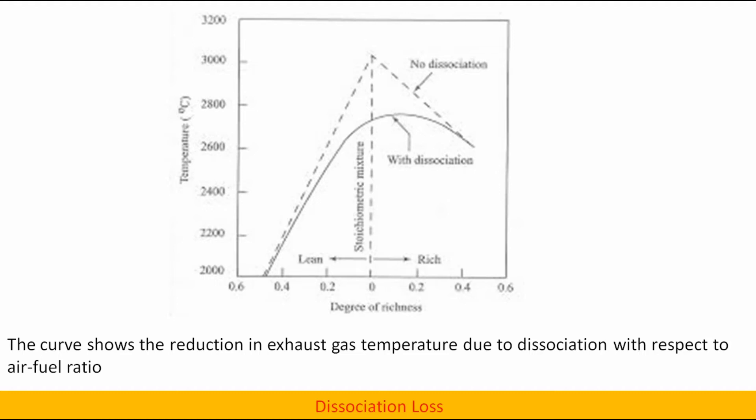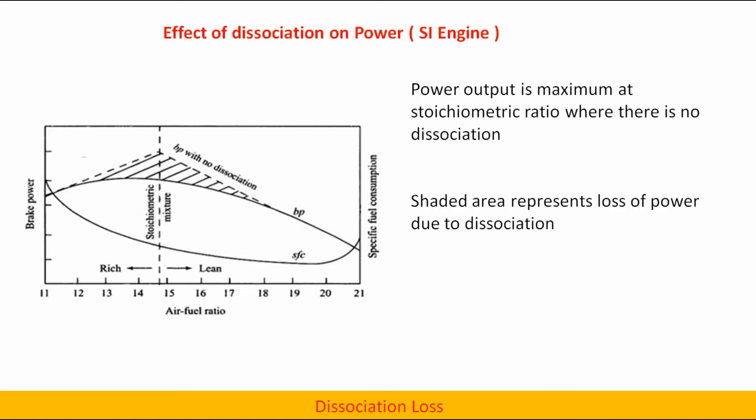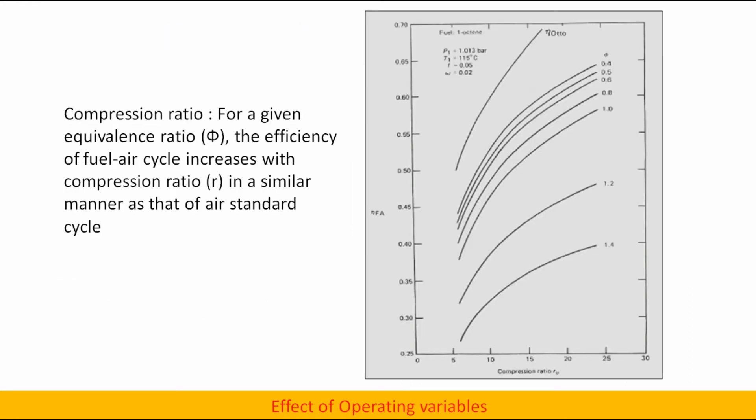The curve shows the reduction in exhaust gas temperature due to dissociation with respect to air-fuel ratio. Effect of dissociation on power: power output is maximum at stoichiometric ratio where there is no dissociation. Shaded area represents loss of power due to dissociation.